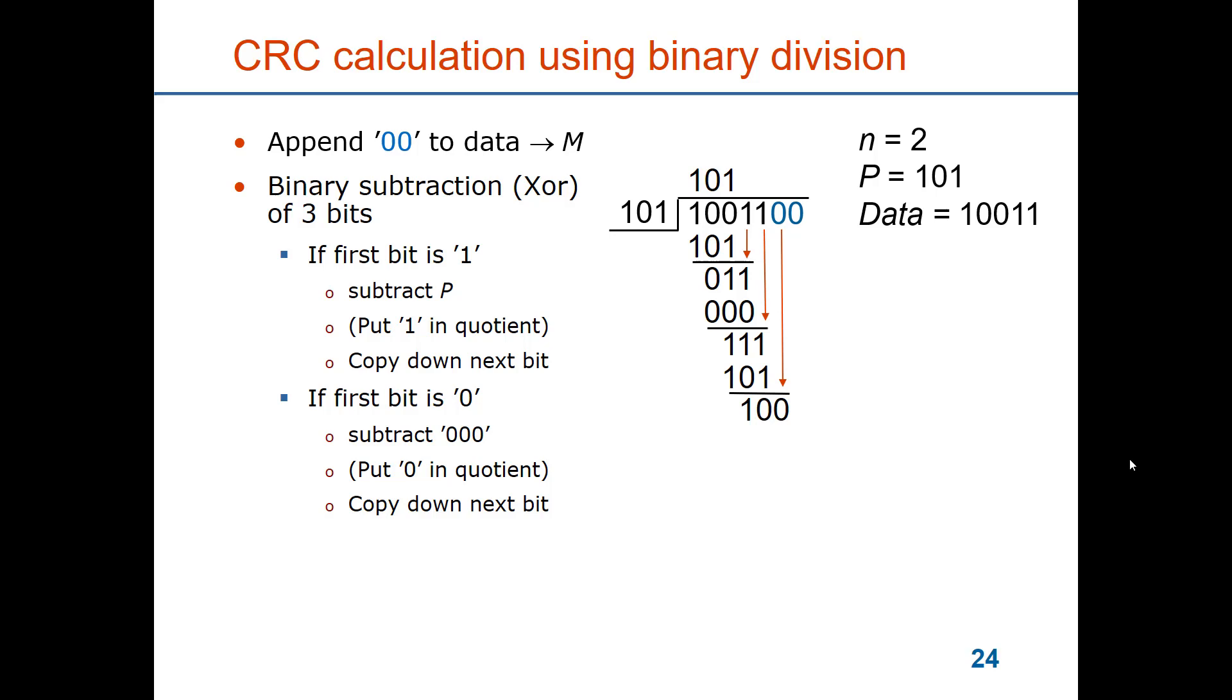And we start to use this extra bit that we appended to the data. So 100 exclusive or with 101 gives us 010. And we have copied down here the last bit. And that exclusive or with 000 gives us a remainder of 10. And this remainder will be added to the data and this will be the message sent to the receiver.